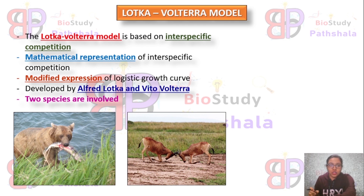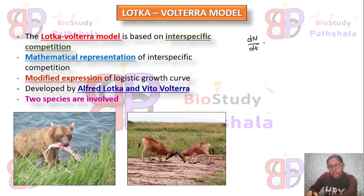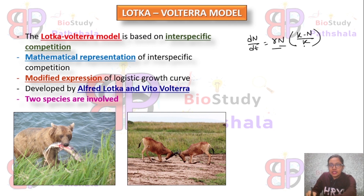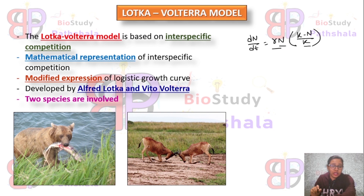The model is based on the logistic growth curve: dN/dt = rN × (K − N) / K, where r is intrinsic growth rate, N is the population size of a particular species, K is the carrying capacity, and dN/dt is the change of population over time. In the Lotka-Volterra model, a minimum of two species are involved in the competition.